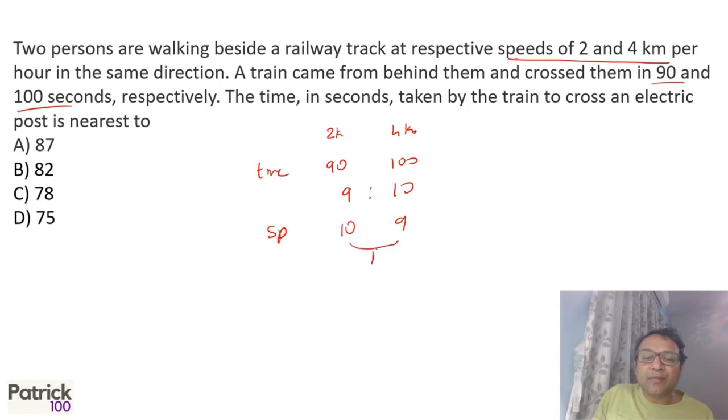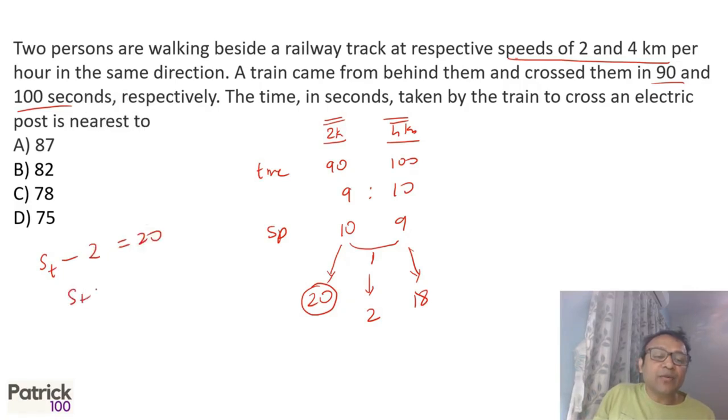The difference is 1, but we know the difference in speed is 2 km/hr because one is 2 and one is 4. So to make the difference 2, we have to multiply by 2. So this becomes 20 and this becomes 18. If this is 20 km/hr, that is the speed of train minus the speed of man which is 2 km/hr equals 20, which means speed of train will become 22. So we know speed of train is 22 km/hr.